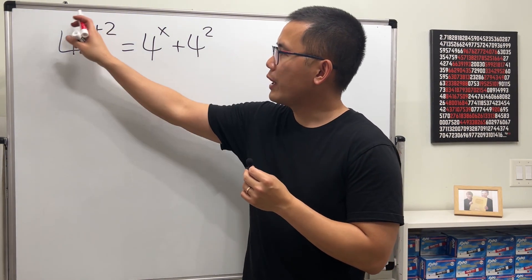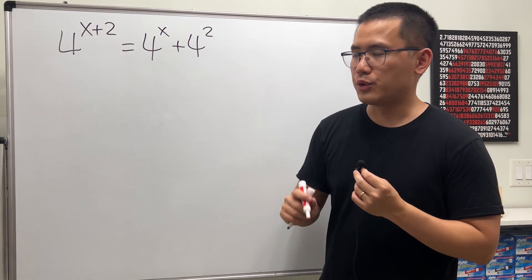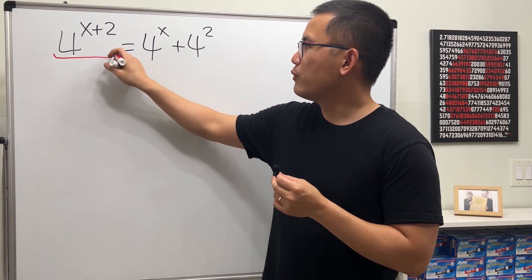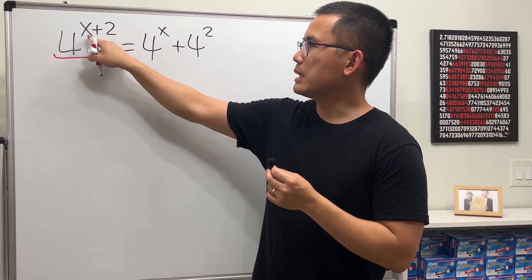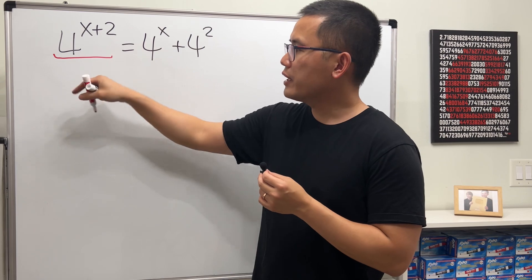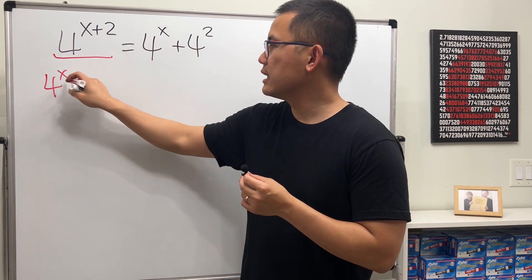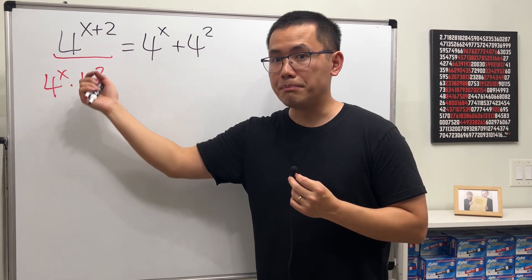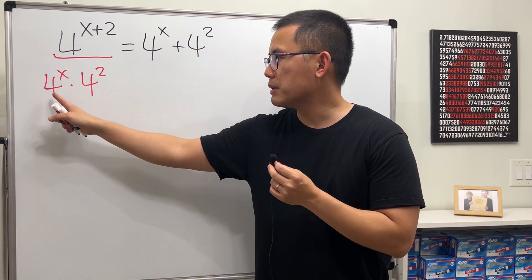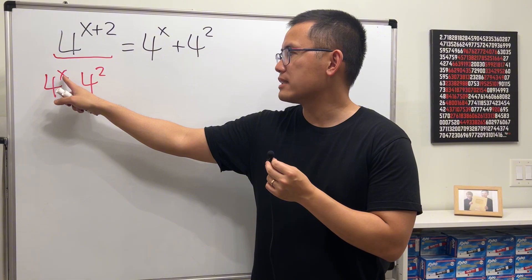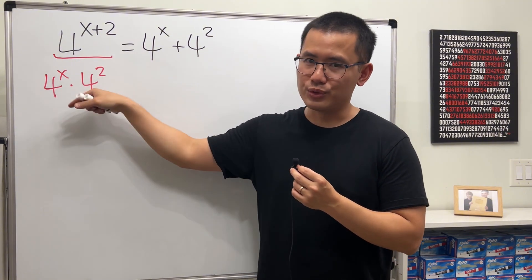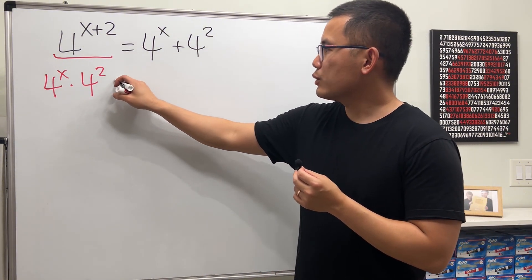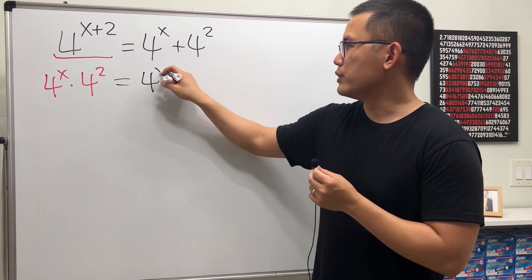First, we have to break it down correctly. When we have 4^(x+2), it's a sum of two exponents. Break it down as 4^x times 4^2 because we're using the rule of exponents backwards. When we multiply this and that, we add x and 2 together. So you see, backwards. Then on the right-hand side, just keep it 4^x + 4^2.